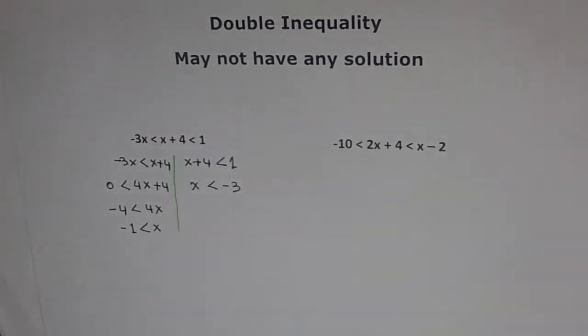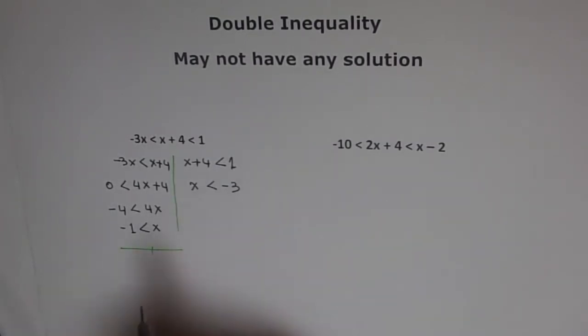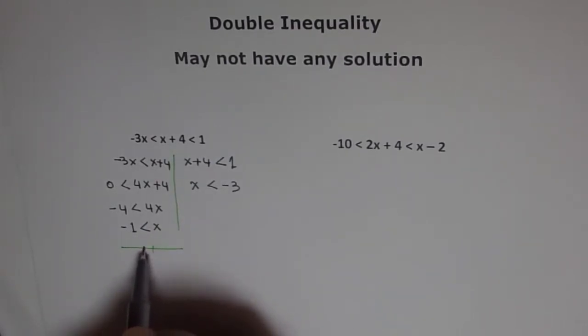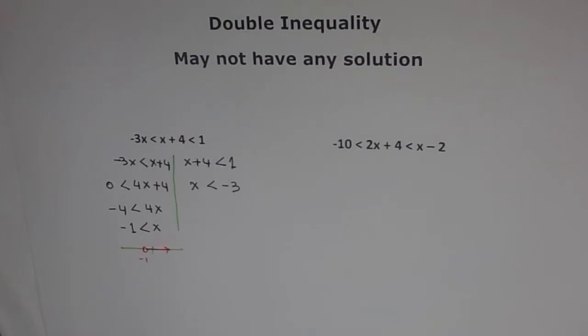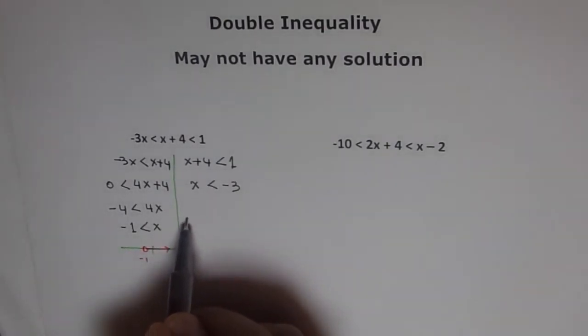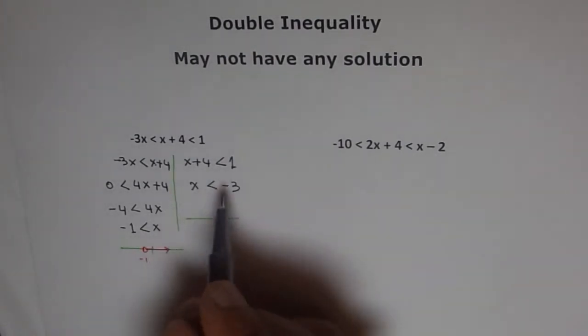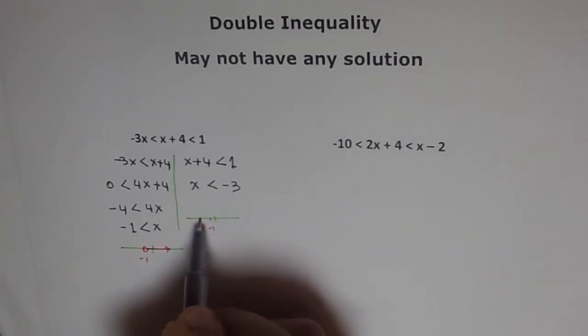Now we got this solution for both the sides and we are looking for a common solution which could satisfy our equation. So let's see on a number line. So if I have a number line here and let's say this is my 0, then the solution says that my x is greater than minus 1. So let's say this is minus 1. So my x is on this side, right side of minus 1. On this, what is the solution here? The solution here is that x is less than minus 3. So we have minus 1 here and let's say minus 3 is here. So the solution here is that x is less than minus 3. That means on this side.